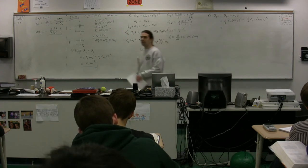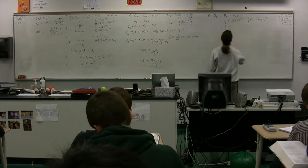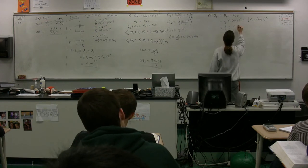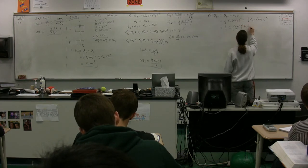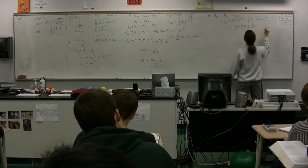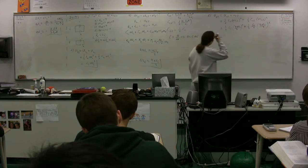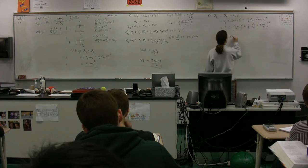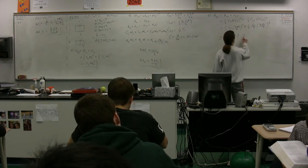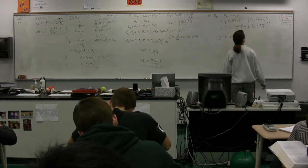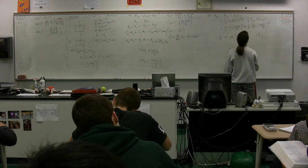Substituting: C1_final equals C_initial, ΔV1_final equals four-thirds ΔV_initial, C2_final equals one-half C_initial, and ΔV2_final also equals four-thirds ΔV_initial. This gives one-half C_initial times (16/9) ΔV_initial squared, plus one-half times one-half C_initial times (16/9) ΔV_initial squared.